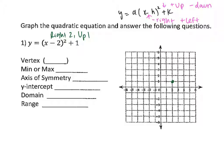Our vertex, because we just plotted it, is (2, 1) — x first, then y. Now we need to draw that U shape for the parabola, because quadratics have this U shape called a parabola. To create this parabola, you need the vertex, which is what we have, but then you need two more points to the side so you can draw a symmetric U.